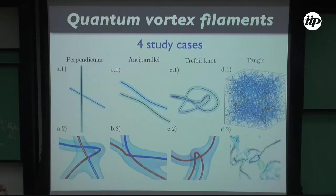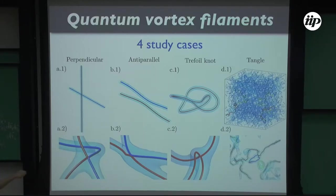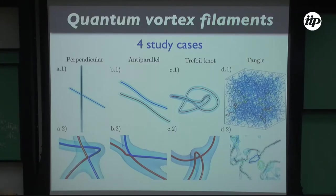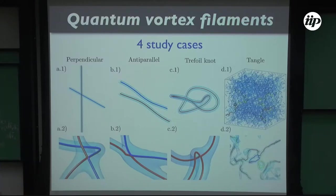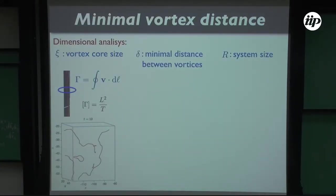We wanted to be generic, so we studied different cases numerically: two vortices initially perpendicular, two that are anti-parallel with perturbations so they develop Crow instability, a knot, and a vortex with some angle. We can see the lines and find reconnections. This corresponds to the lines of a tangle — we track them and observe the reconnection times. We see two-line reconnections, self-reconnections, and multiple reconnections inside the tangle.